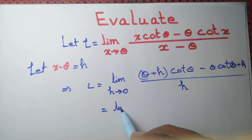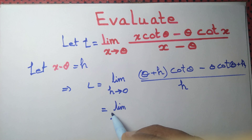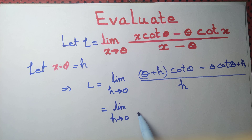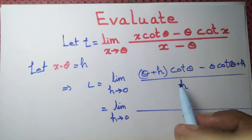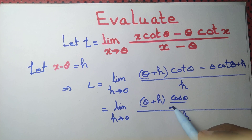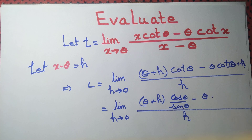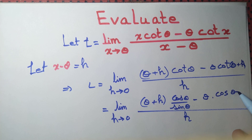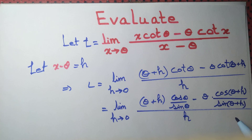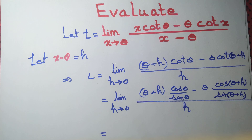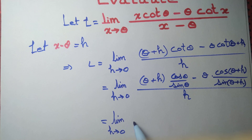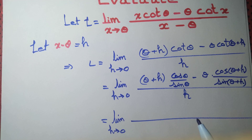We don't have any standard formula for cotangent that we can apply directly so far. So let's write cot in terms of cos over sin. Cot can be written as cos(θ)/sin(θ). If we want to simplify, we have to take the LCM, and we have to cross-multiply as well.